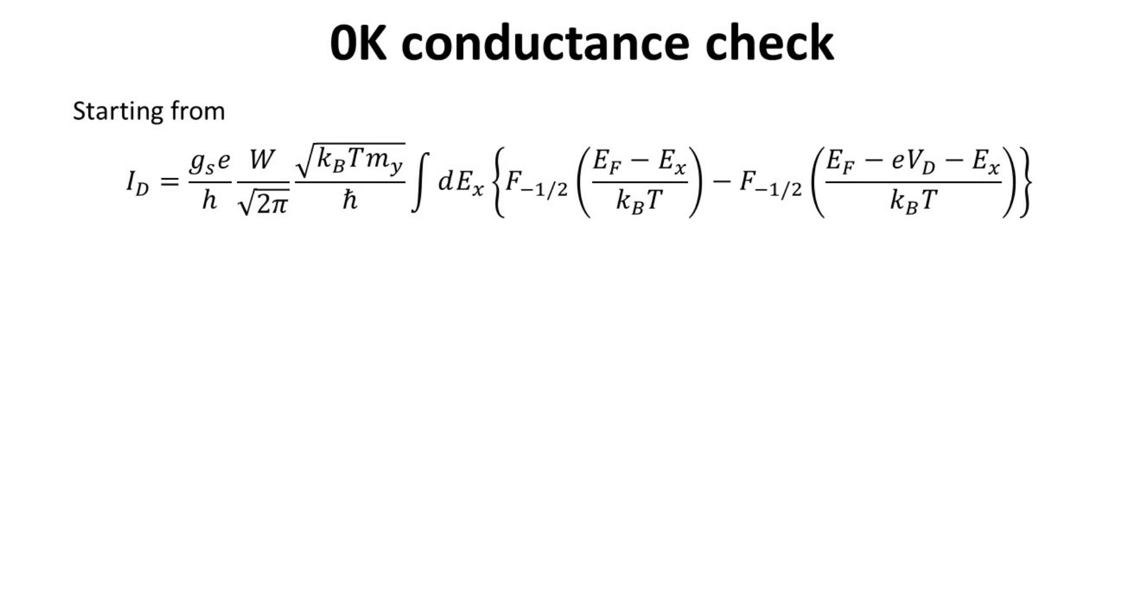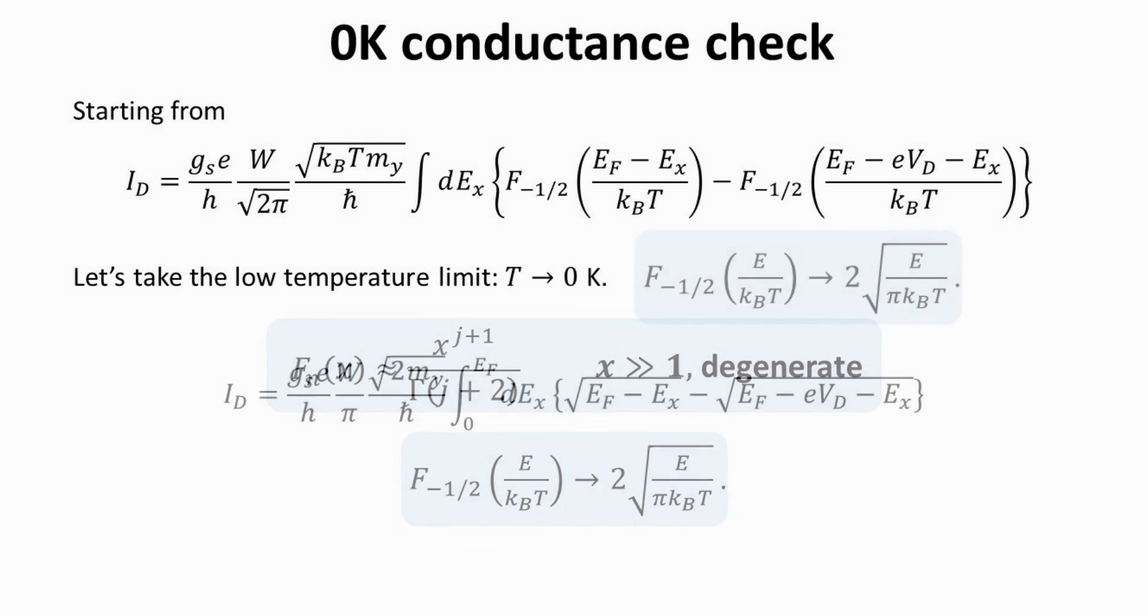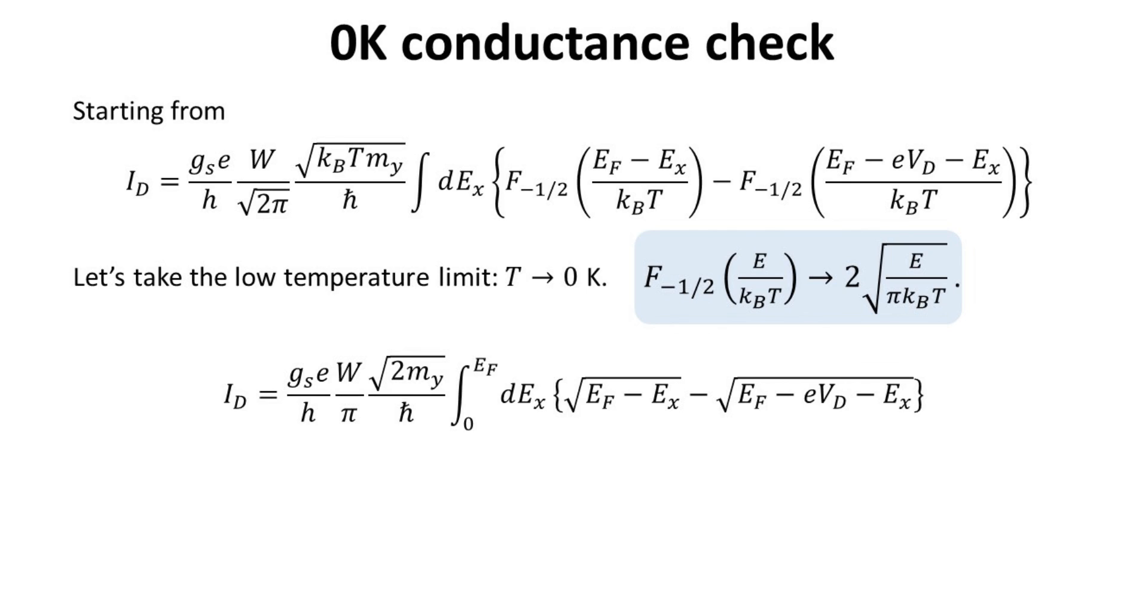Let's start with the expression for the drain current we derived earlier, in terms of the Fermi-Dirac integrals as shown. If we take the zero temperature limit, then the Fermi-Dirac integrals of minus one half can be approximated by its expression in the degenerate limit. Thus, the integran now involved only the square root of energies. With some simple algebra, we can factor out one of the square root.